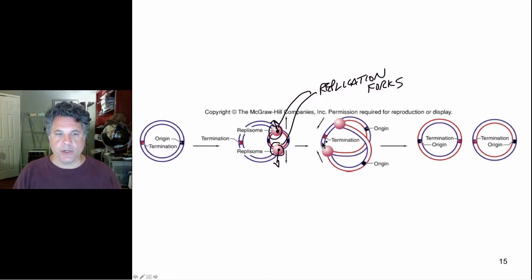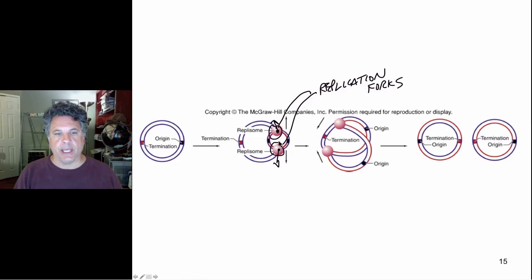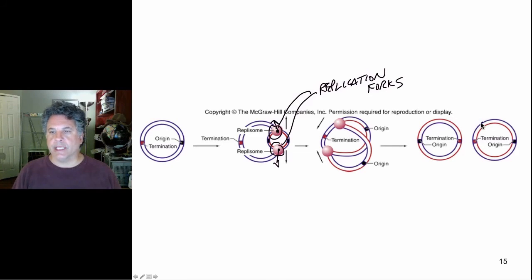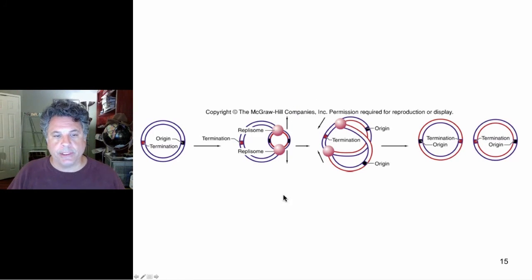In a bacterial chromosome, the replication forks proceed around the chromosome with the enzymatic structures required to synthesize DNA. There are enzymes responsible for the polymerization of nucleotides into new strands of DNA in each direction. Those enzyme complexes proceed around the chromosome until the termination point, ultimately yielding two molecules, each containing a completely conserved parental strand shown in purple and a completely newly synthesized strand shown in red.